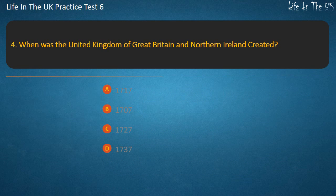Question 4. When was the United Kingdom of Great Britain and Northern Ireland created? Options: 1717, 1707, 1727, 1737. Answer: 1707.